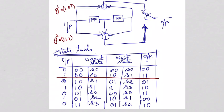First, let us consider the state 00. When you apply 0 as input, there will be no change in the next state — it remains 00. The output is 0 plus 0 plus 0 in both the bottom adder and the top adder, so the output is 00. When you apply 1, the 1 will be available at the input and 0 will come out of the flip-flop. The output from the top adder is 1 and from the bottom adder also 1, so the output is 11.